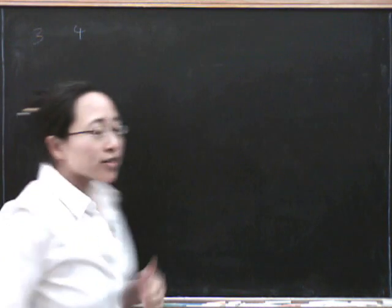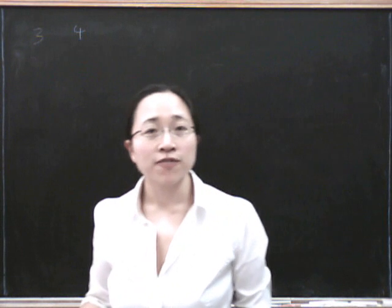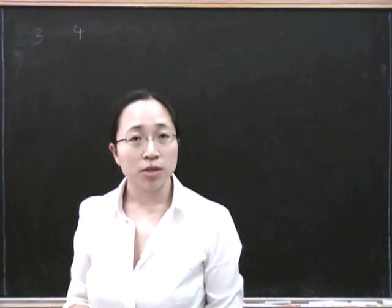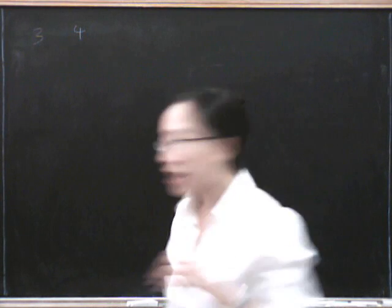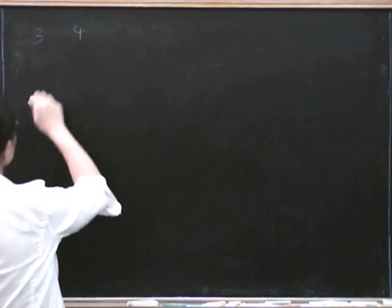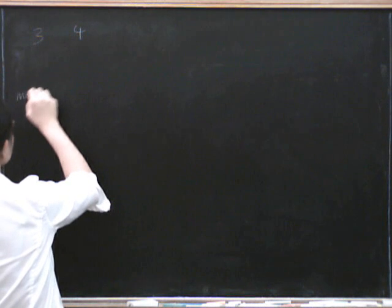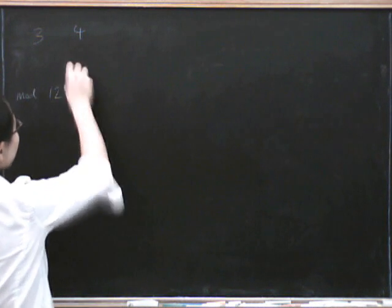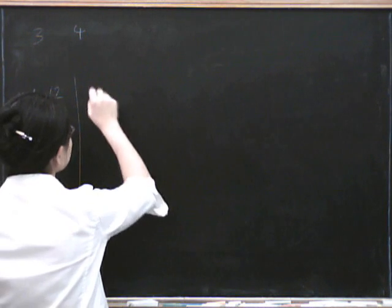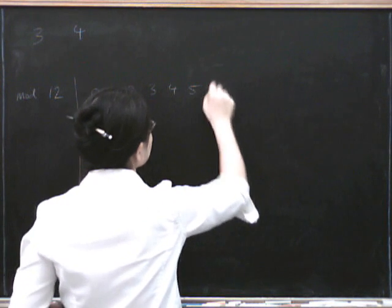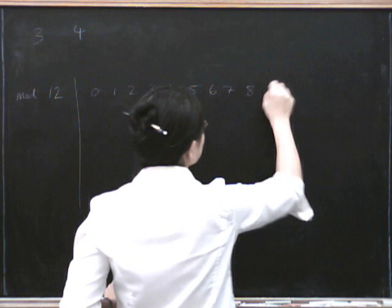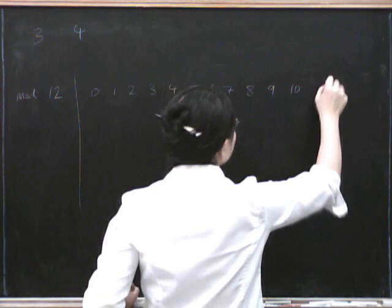So the idea is that we're going to look at all the possible values mod 3 and all the possible values mod 4, and that's going to tell us about all your possible values mod 12. So if we do mod 12 here, what possible things can you be mod 12? You can be 0, 1, 2, 3, 4, 5, 6, 7, 8, 9, 10, or 11.